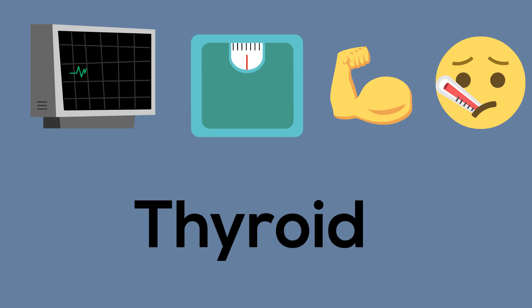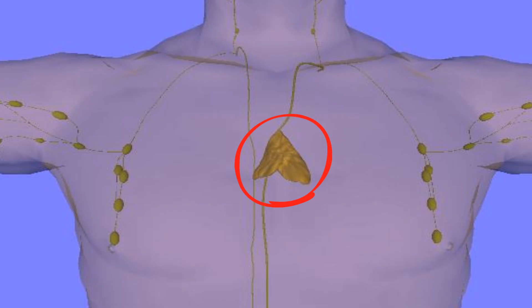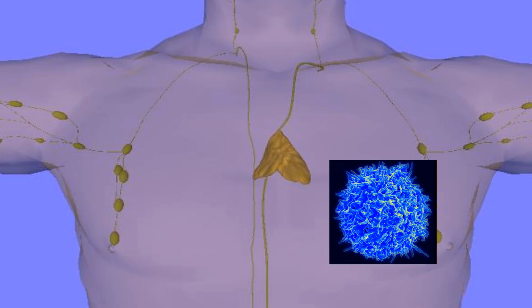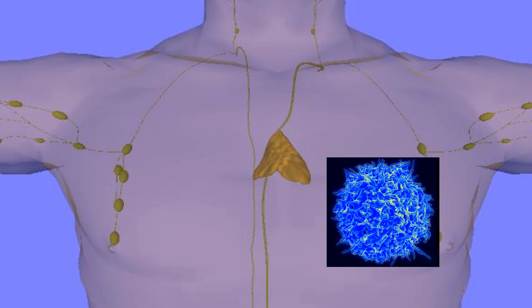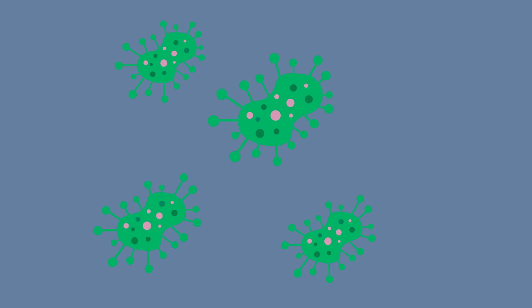And finally, your thymus is located behind your sternum and helps your immune system by training and developing T cells, which are very important white blood cells. These T cells defend your body from getting sick by fighting deadly pathogens such as bacteria, viruses, and fungi.